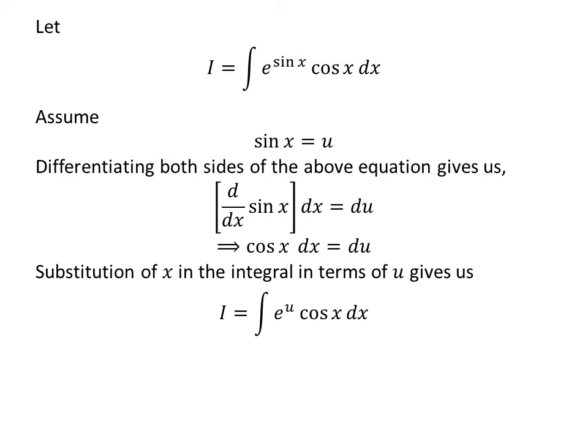Substitution of sin x by our assumed value u in the integral gives us I equals the integral of e to the u times cos x. Now let us replace cos x dx by du, which we found earlier, so I equals the integral of e to the u with respect to u.